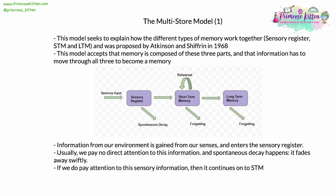The first model of how memory works is called the Multi-Store model. This model tries to explain how the different types of memory work together and interact — that is, sensory register, short-term memory or STM, and long-term memory or LTM. This model was proposed by Atkinson and Shiffrin in 1968, and accepts that memory is composed of three basic parts, with information having to move through all three to become a fixed memory.